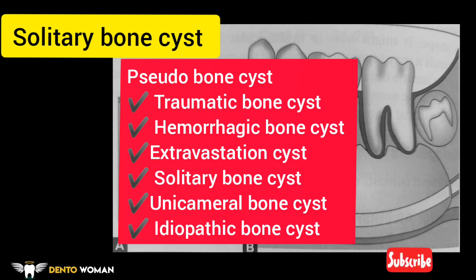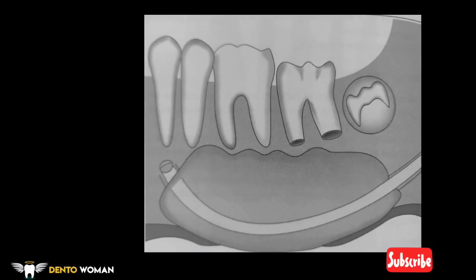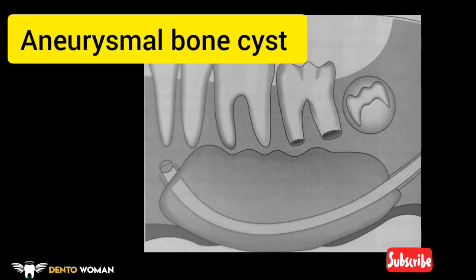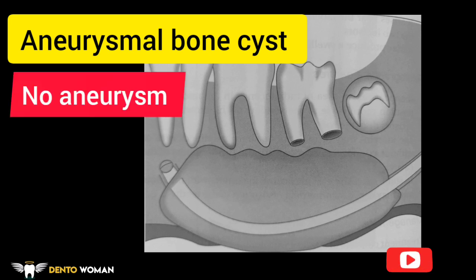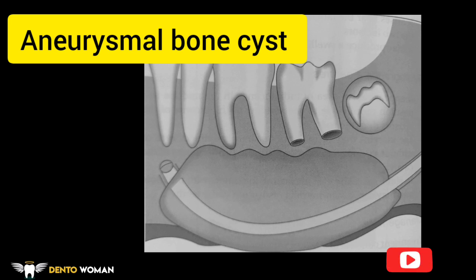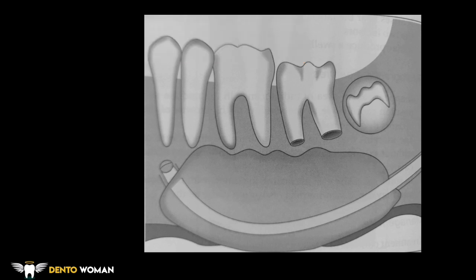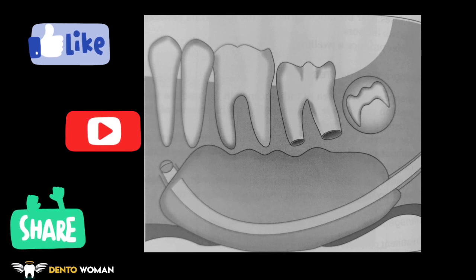Here is the schematic representation of the aneurysmal bone cyst. This is an uncommon hemorrhagic lesion of bone — the name is misleading in that it does not contain a vascular aneurysm and it is not a true bone cyst. It represents an exaggerated localized proliferative response of vascular tissue. It is more common in individuals less than 30 years of age with a predisposition for females, whereas for pseudocysts like traumatic and hemorrhagic bone cysts there is male predominance, and there may be a history of traumatic injury and recent displacement of vital teeth. This was all about cysts — thanks for watching, see you in the next video.